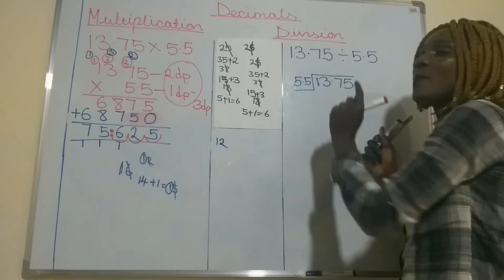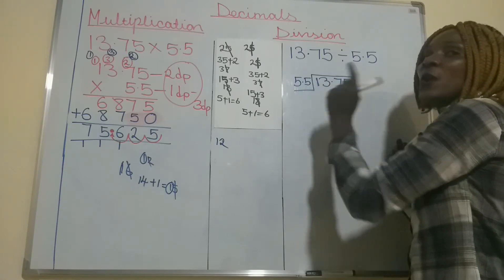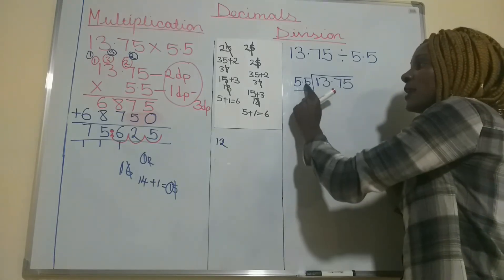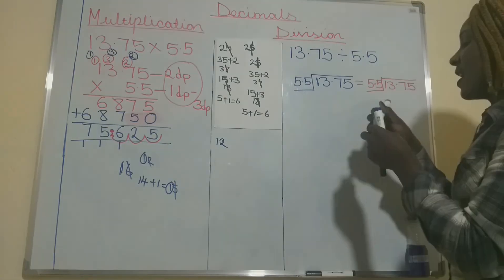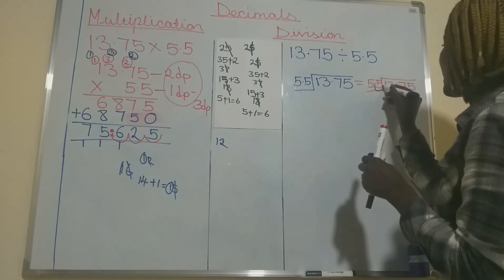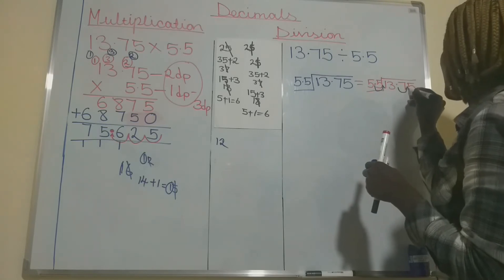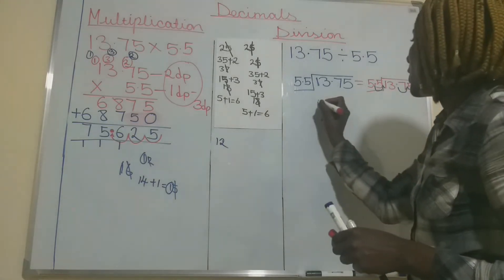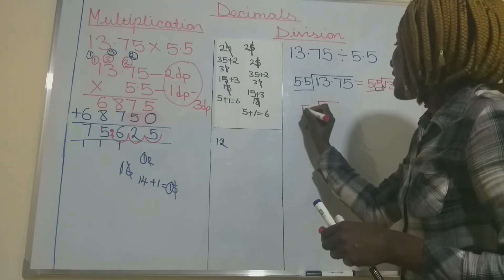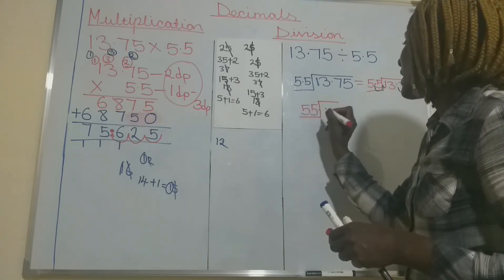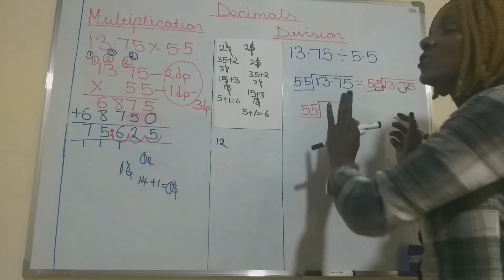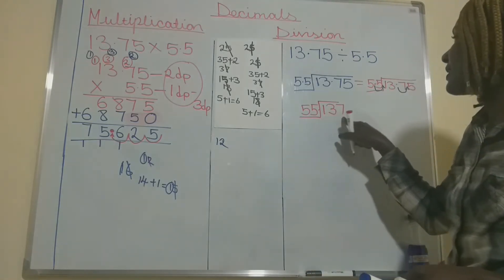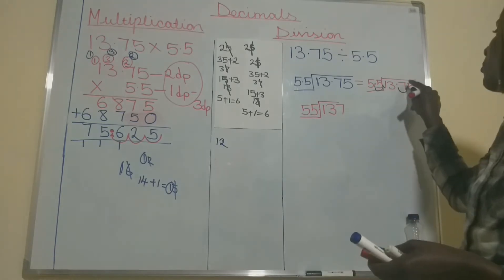Because we moved one decimal place for the divisor, we also move one decimal place in the dividend. When we move one decimal place here, the decimal point moves so that 5.5 becomes 55 — a whole number. And 13.75 becomes 137.5 because the decimal point has moved after the 7. So you put your 7 there and your 5 there.